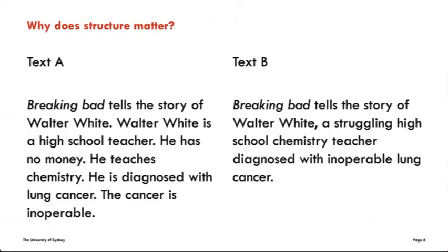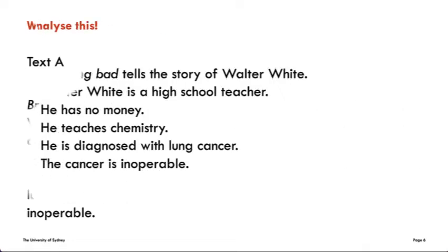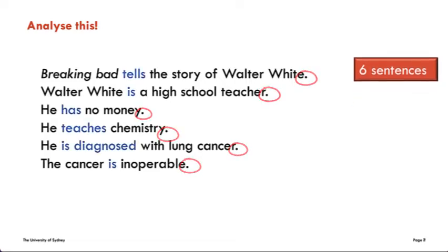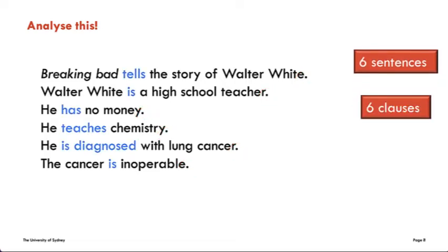Why does this matter? Well, let's compare the structure of these two texts. You'll see that the information is the same, but the structure is quite different. Which one do you prefer? So in Text A, we have six sentences. We know this because there are six full stops. There are also six clauses. A clause is a grammatical unit containing a verbal group.